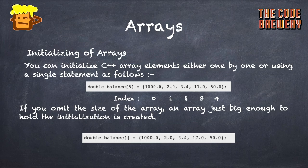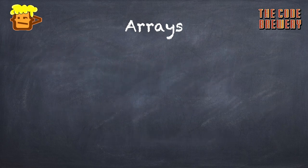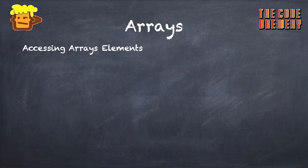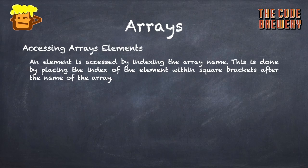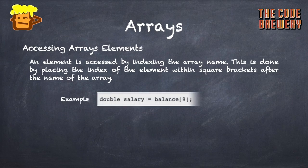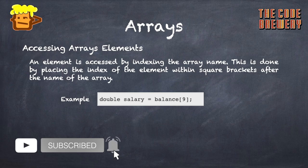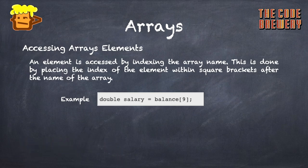Accessing an element from an array is an easy process. Remember that elements start from index zero, so to access the fourth element you use index 3. An element is accessed by indexing the array name — this is done by placing the index within square brackets after the array name. For example, 'double salary = balance[9]' assigns the tenth value in the balance array to salary.